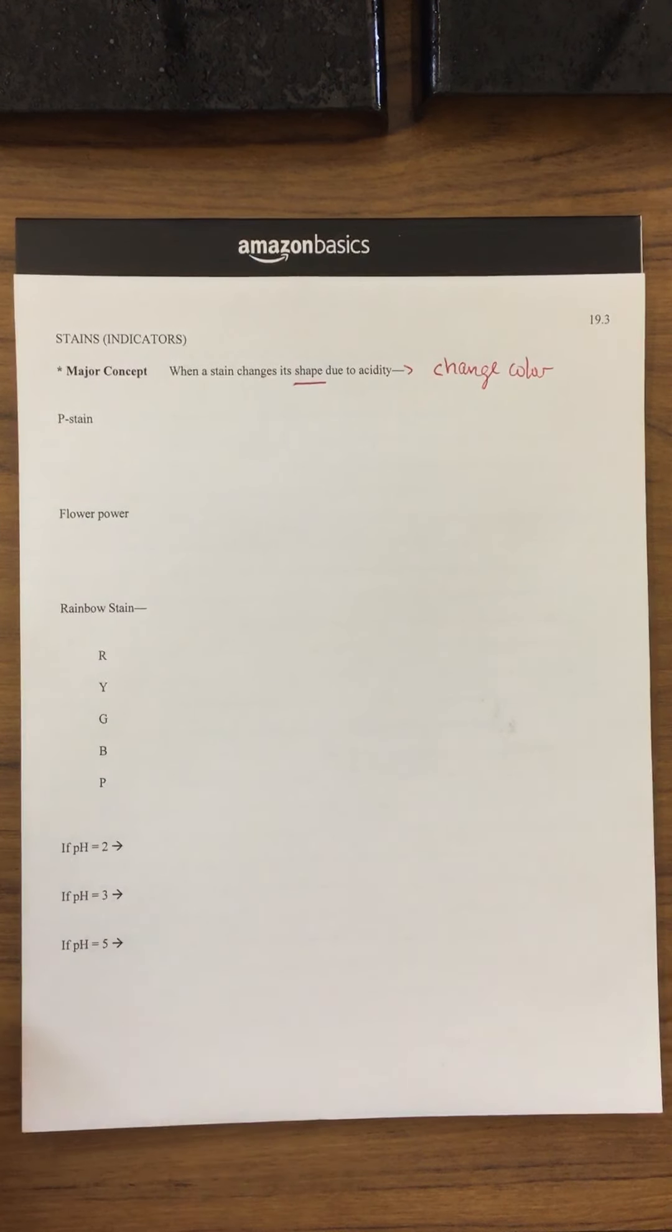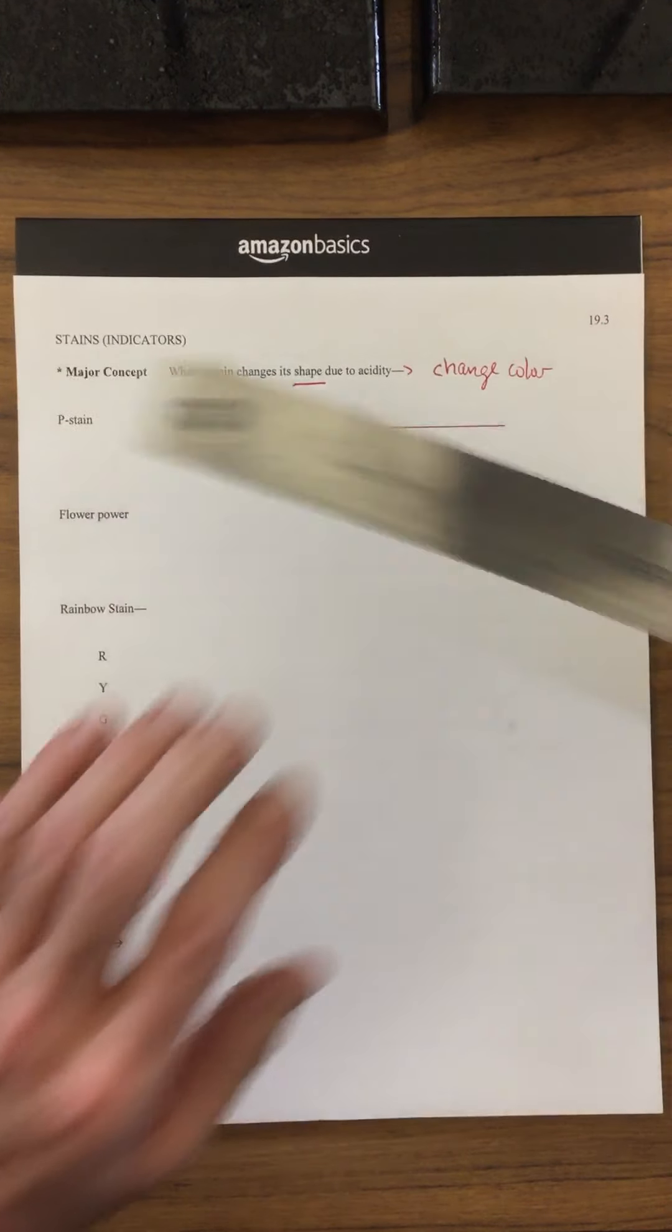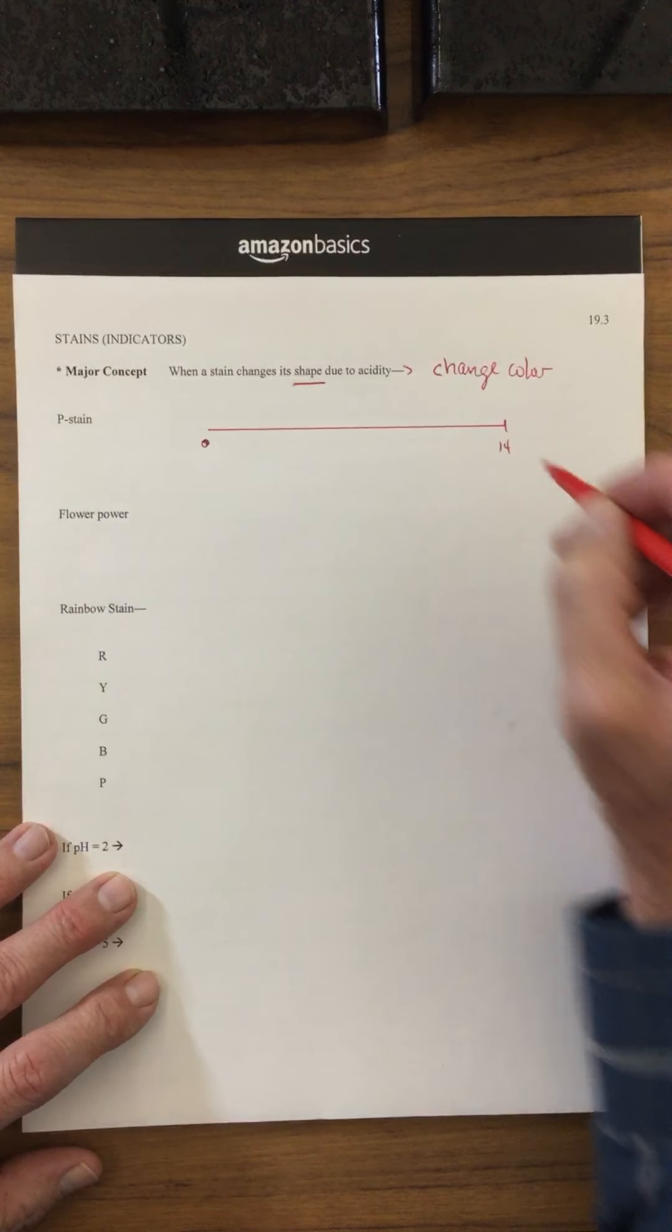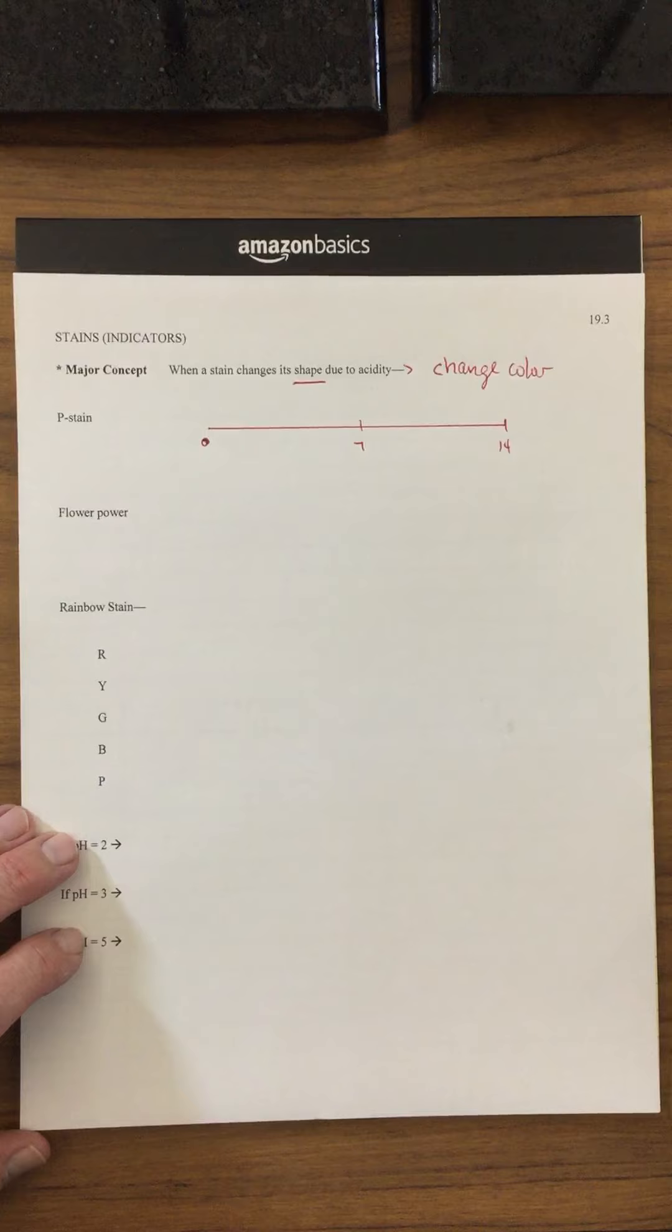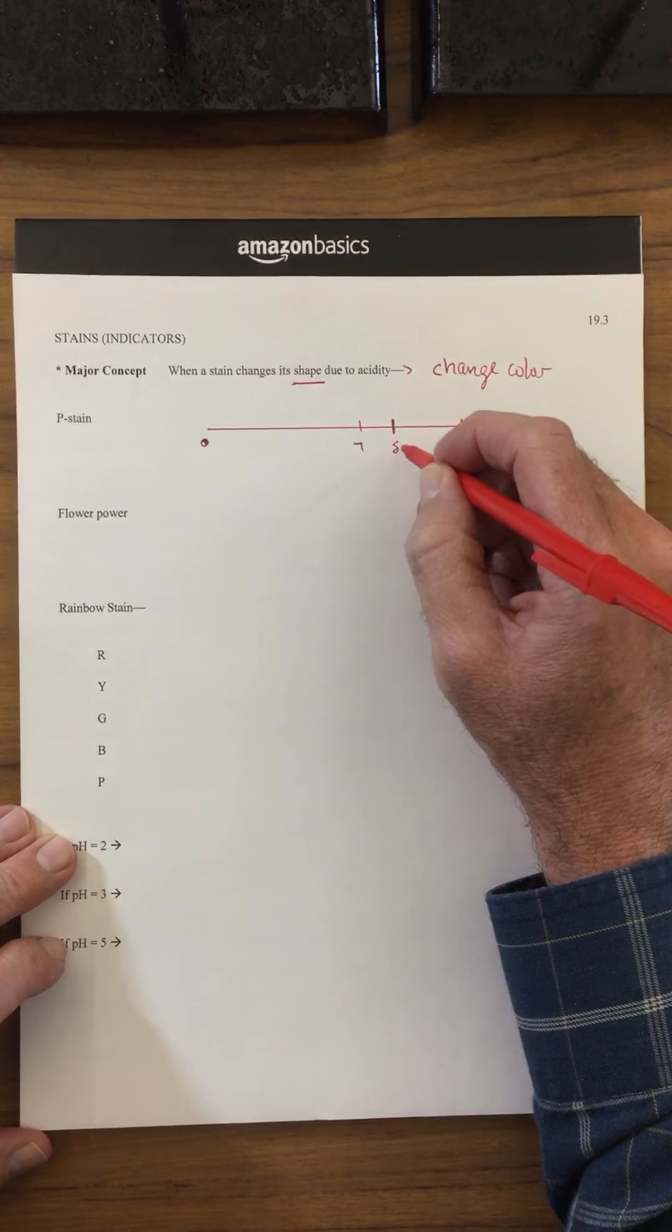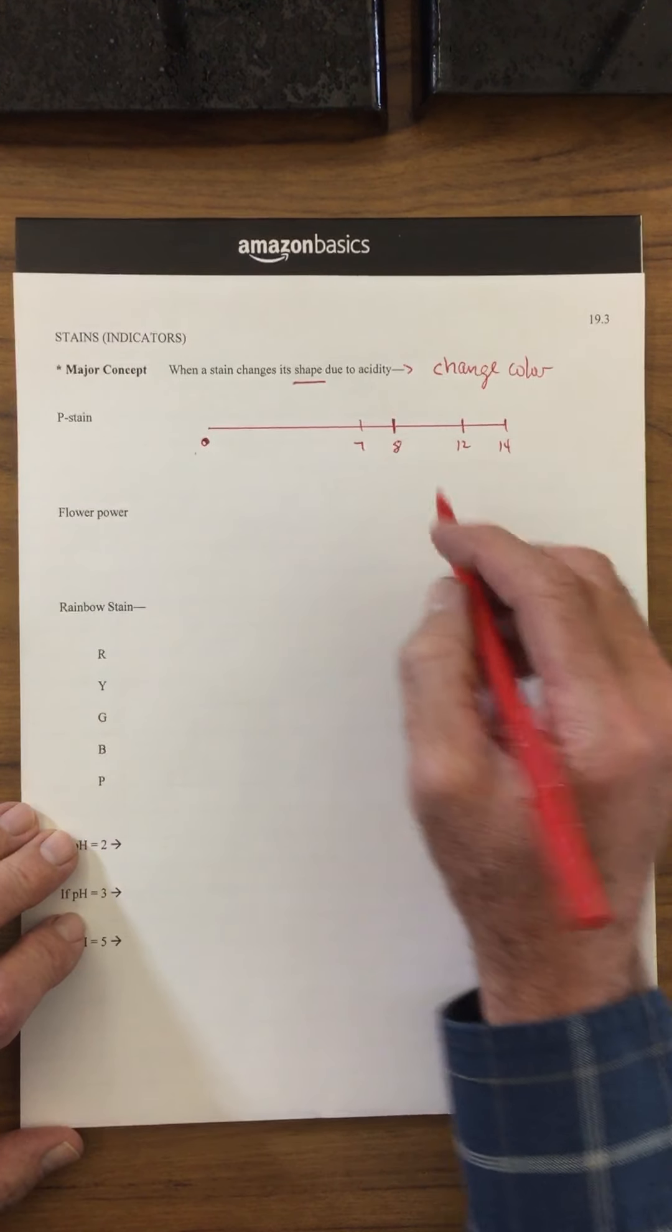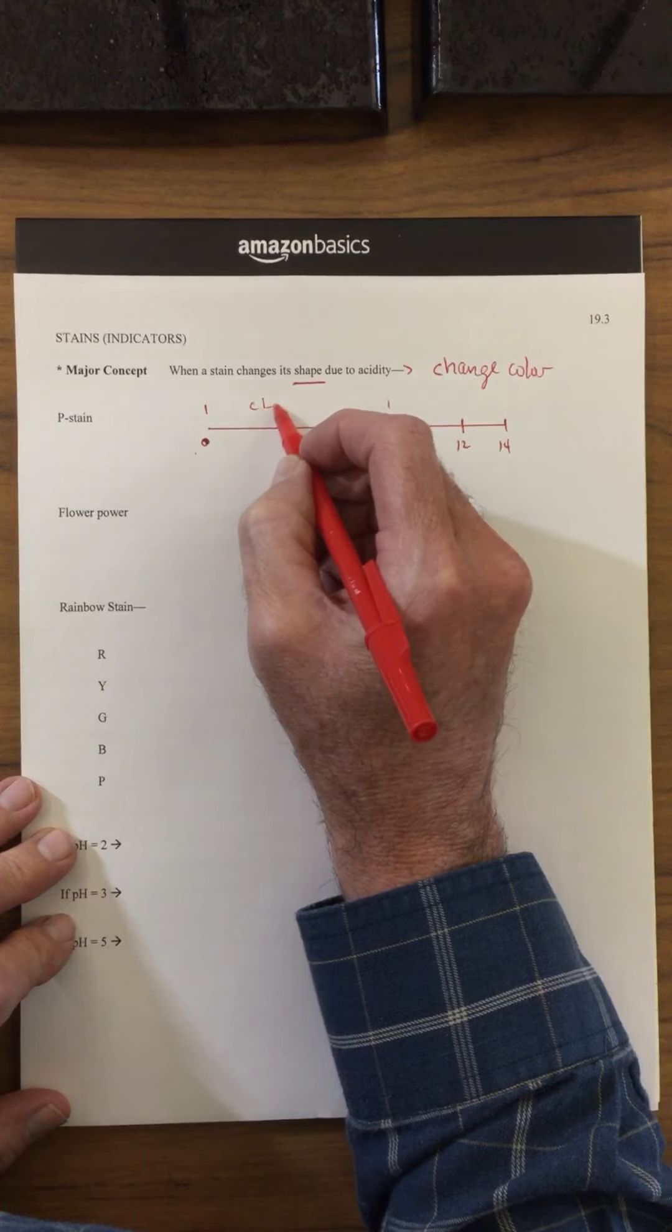So what I was actually using in the flower was some phenolphthalein, which we've worked with before. Here's the range that the pH stain works. I'm going to draw a line here—here's the pH scale going from 0 up to 14, right in the middle is 7. The phenolphthalein activity is within a very special range, from about 8 to about 12. If it has a pH of less than 8, between 0 and 8, this range over here is going to be clear.